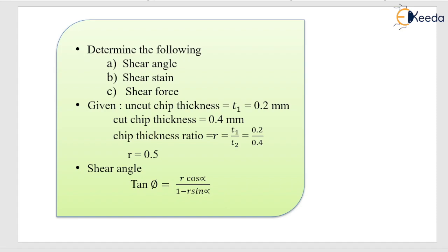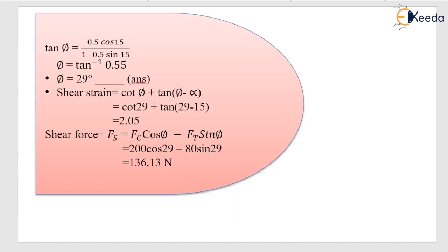The shear angle can be calculated easily since alpha is given as 15 degrees. The formula is tan(phi) = r·cos(alpha) / (1 - r·sin(alpha)). Substituting r = 0.5 and alpha = 15 degrees, we get phi = 29 degrees.